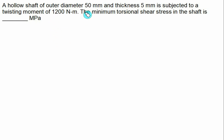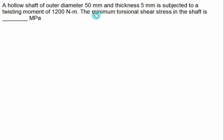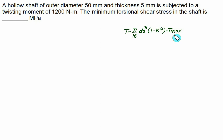A hollow shaft of outer diameter 50 mm and thickness 5 mm is subjected to a twisting moment of 1200 Newton meter. We have to find the minimum torsional shear stress in the shaft. The minimum value occurs at the inner surface, while the maximum occurs at the outer surface. Using the torsion formula, we can calculate τ_max at the outer radius, and since there is a linear relation from inner to outer, we can then calculate the minimum.